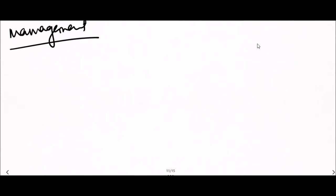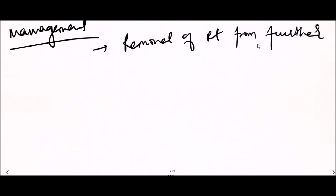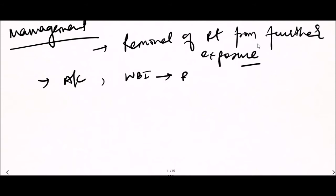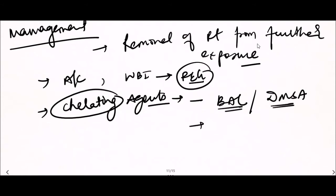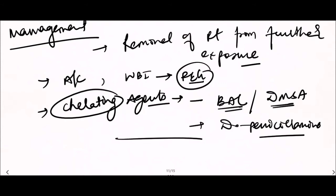Management of mercury poisoning: first and foremost is removal of the patient from further exposure. We can also use activated charcoal or whole bowel irrigation using polyethylene glycol. Chelating agents of choice are BAL (British anti-Lewisite) and DMSA. Sometimes D-penicillamine can also be used.